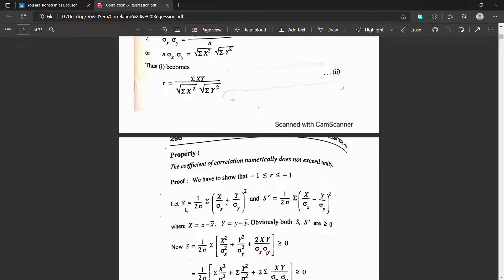At the end, we can also see the property of coefficient of correlation. Numerically, it does not exceed unity. That means r is greater than or equal to minus 1 and less than or equal to plus 1.